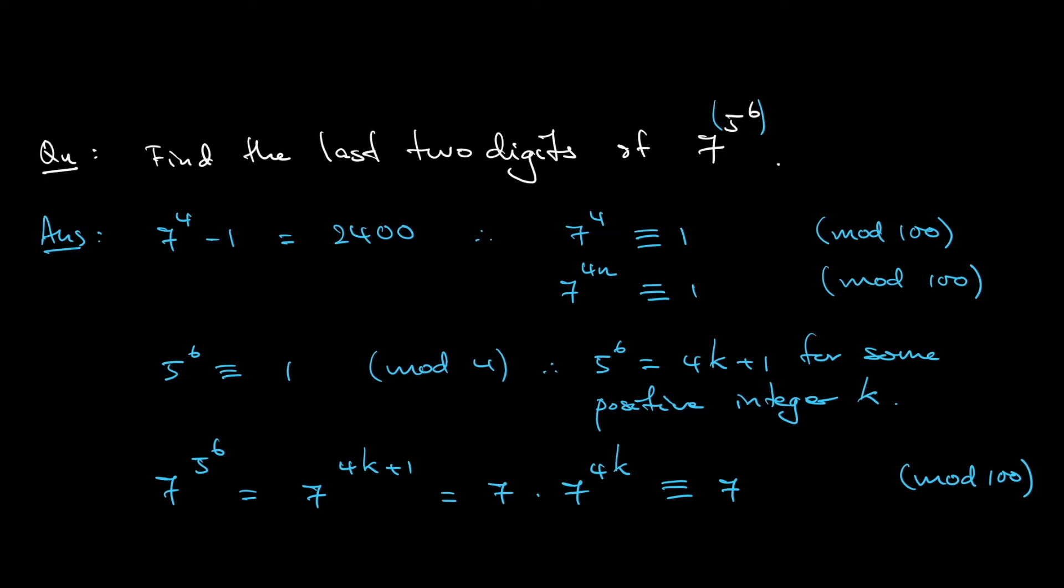7 to the power of 4k, 4k or 4n is the same thing, okay, n and k is basically just any integer, any positive integer will do. So 7 to the power of 4k is congruent to 1, alright, as we can solve from the second line there.